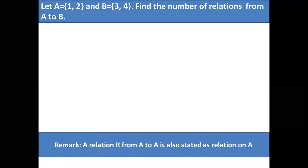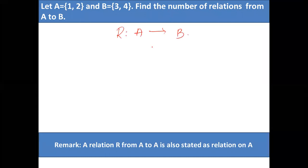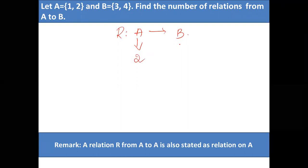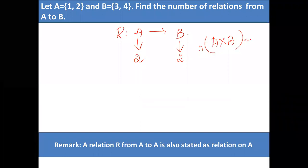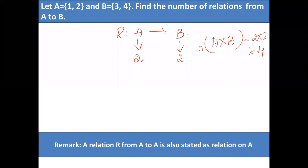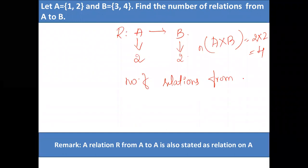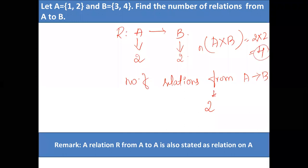For example, let A = {1, 2} and B = {3, 4}. You have to find the number of relations from A to B. A has 2 elements, B has 2 elements, so A cross B has 4 elements. Therefore, the number of relations from A to B is 2 to the power 4, which is 16. Below you can see a remark: if the relation is from A to A — both the start set and end set are the same — we say it is a relation on A.